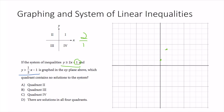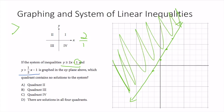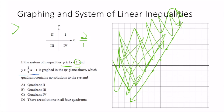My slope is 2 over 1 — rise over run. I go up 2, over 1 twice. My line looks something like this. Now because it's an inequality and I'm greater than 2x + 1, anything above the line can be a solution. If it were less than, it would be everything below the line.